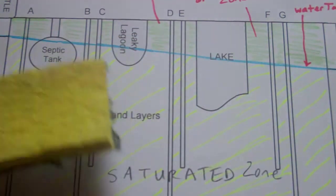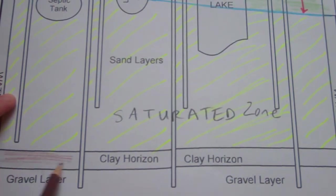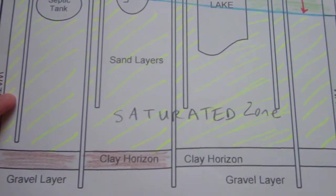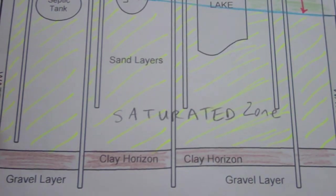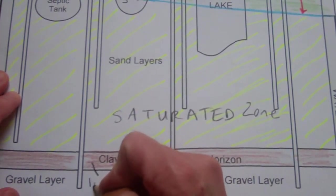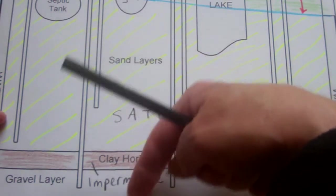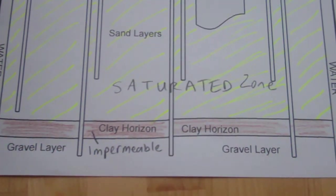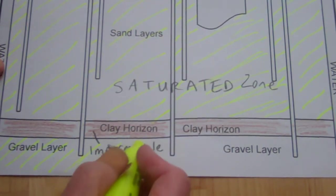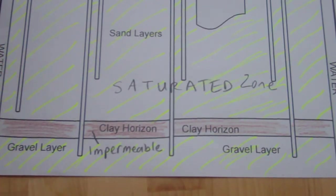Below the aquifer, notice the clay horizon — a layer of clay. Clay is not permeable; when you played with clay as a child you could tell water doesn't pass through it. So clay is impermeable. This means water can't seep through from above to below this layer. Underneath the clay is another gravel layer, making it another aquifer — a gravel-type sponge storing water.